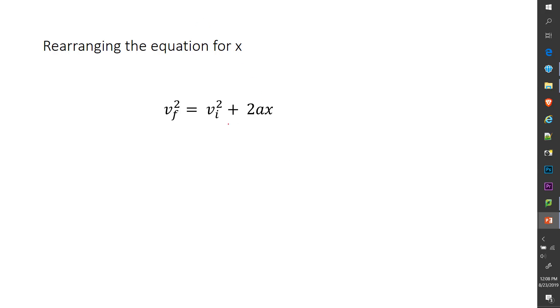If I want to rearrange it for x, it's kind of the same deal. Minus VI squared. Let's get rid of this. VF squared minus VI squared equals 2Ax. I want to get rid of the 2A this time. Let's get rid of 2A all at once. And x equals VF squared minus VI squared over 2A.